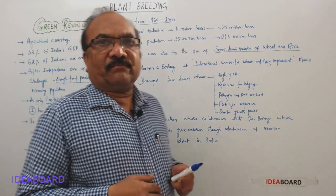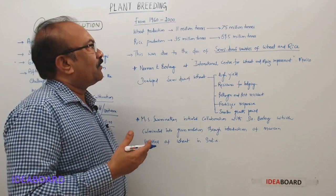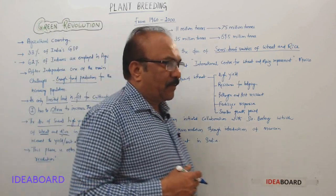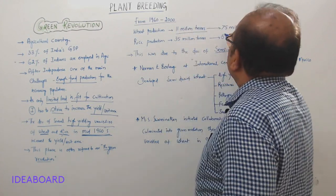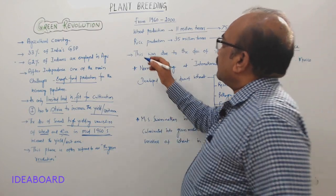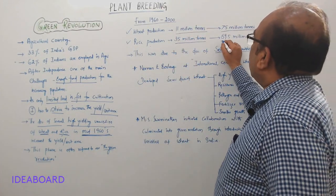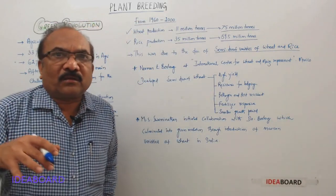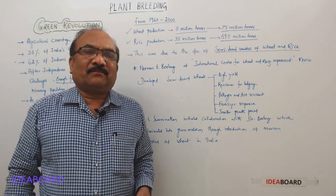The Green Revolution occurred between the years 1960 to 2000. The achievements are remarkable: wheat production was earlier 11 million tons and it increased to 75 million tons. Similarly, rice production was earlier 35 million tons and that has been increased to 89.5 million tons. This is more than sufficient — that is why now India is able to export rice as well as wheat.